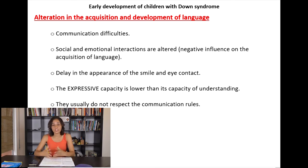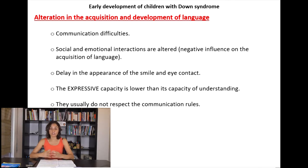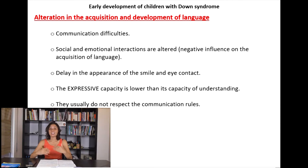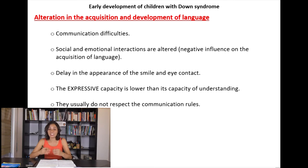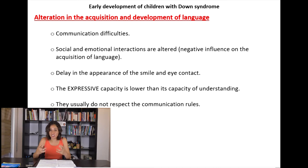There is also an obvious alteration in the acquisition and development of language. Communication difficulties are observed even before the appearance of language. The development of spoken language results from the emotional and social interactions the child establishes with their environment. In children with Down syndrome, these social and emotional interactions are altered, which negatively influences language acquisition. There is also a delay in the appearance of the smile and eye contact, which are essential in the initiation and maintenance of communication.